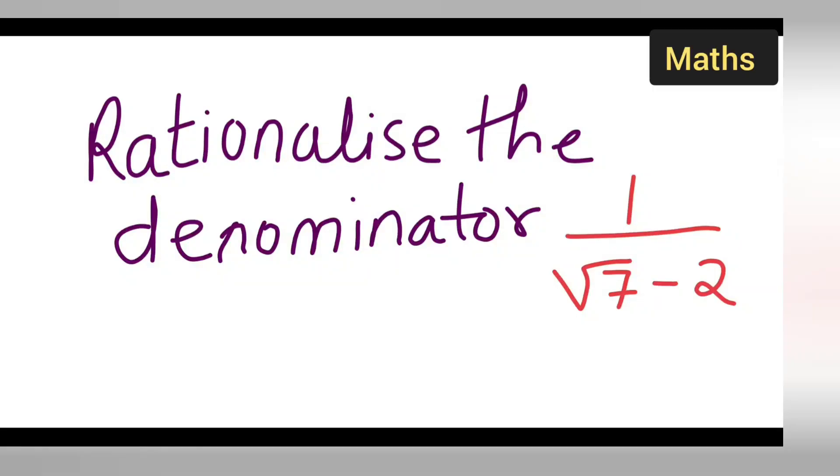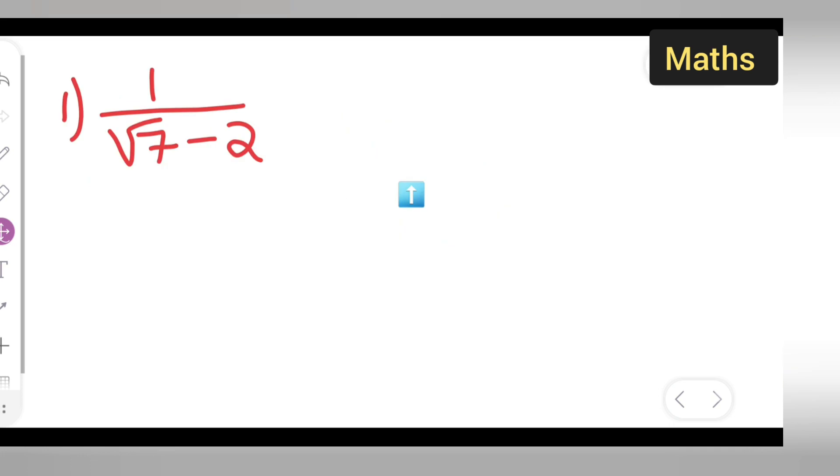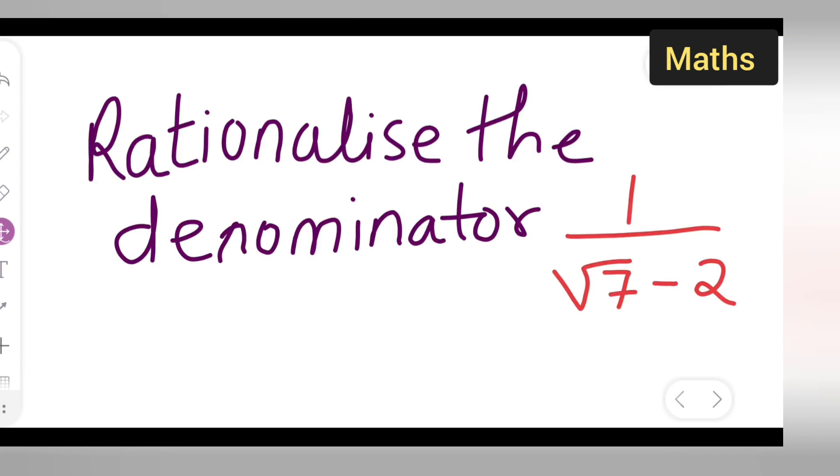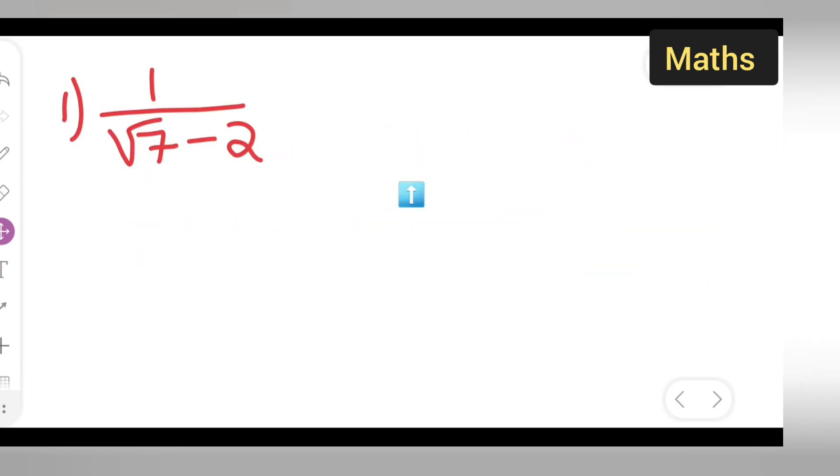Welcome to today's class of mathematics. Let us see how to rationalize 1 upon root 7 minus 2. First, we can take down the question: rationalize the following denominator, 1 upon root 7 minus 2.